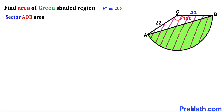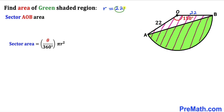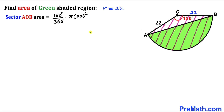Let's calculate the area of sector AOB. Recalling the sector area formula: area equals theta divided by 360 degrees, times pi r squared. In our case, r is 22 and theta is 150 degrees. Substituting: 150 degrees divided by 360 degrees, times pi times 22 squared. Simplifying the fraction — the zeros cancel, giving us 15 over 36, which reduces to 5 divided by 12.